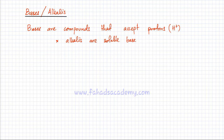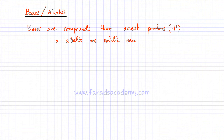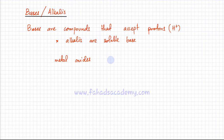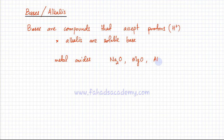Now I'm going to discuss which compounds are called bases — which compounds have the property of accepting H⁺ ions. The first general category is metal oxides — most metal oxides are bases. A metal oxide is a metal bonded to an oxygen in an ionic compound. For example, sodium oxide (Na₂O), magnesium oxide (MgO), and aluminium oxide — although that's amphoteric — can all be classified as bases.